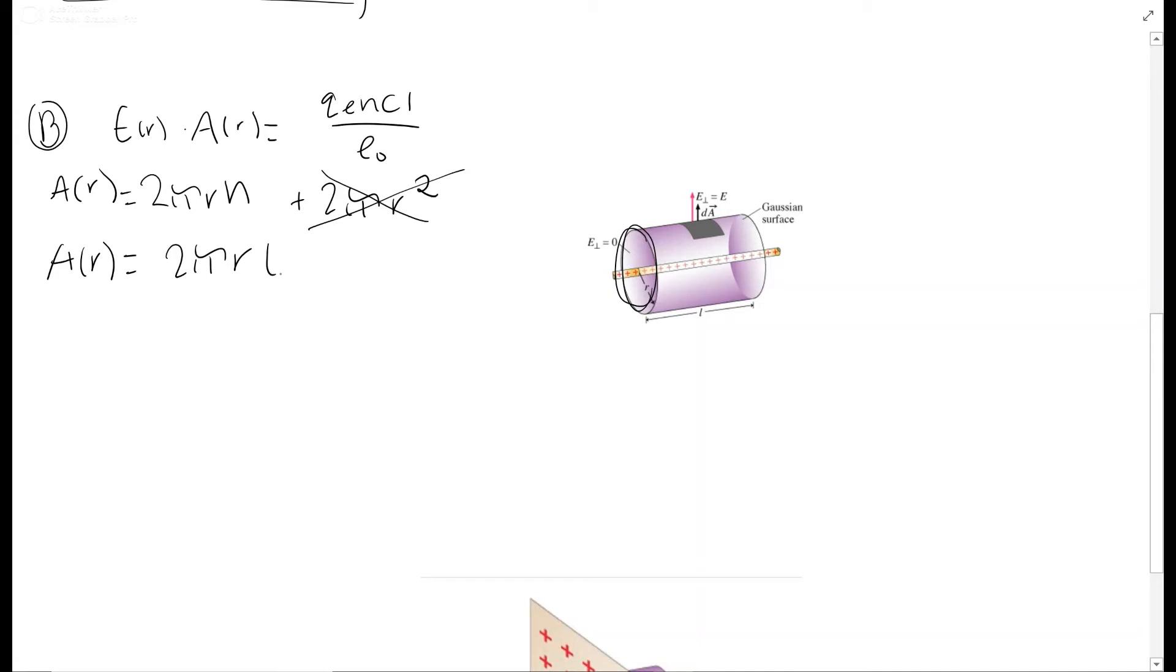So now our A_r is 2 pi r and our height is L in this case. So 2 pi r L. Then we have Q enclosed, which for this case is lambda L. Q enclosed is a charge. Lambda is a charge per length. So multiply that by length and you are left with your charge from Q enclosed. So this is lambda and this is L to get Q because Q is a charge.